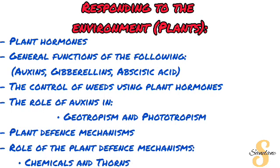When studying plant hormones, for example, make sure you can define what a hormone is. We then look at the general functions of the following: auxins, gibberellins, and abscisic acid. We also look at the control of weeds using plant hormones and how that works. You'll also look at the role of auxins in geotropism and phototropism — make sure you can distinguish between those two. Finally, we look at plant defense mechanisms: specifically the chemicals and physical forms involved.